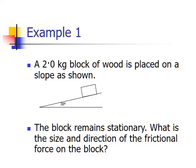Let's look at an example. A 2 kilogram block of wood is placed on a slope as shown. The block remains stationary. What is the size and the direction of the frictional force that acts upon the block? This slope is at 30 degrees.